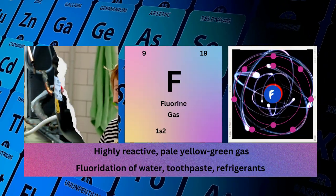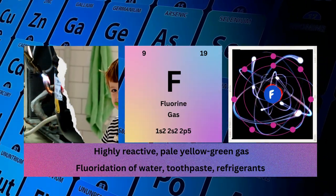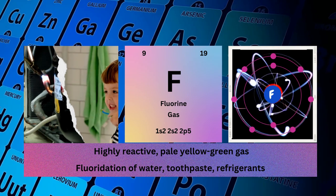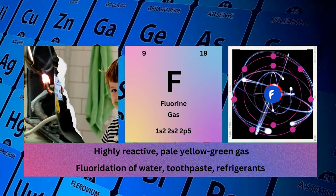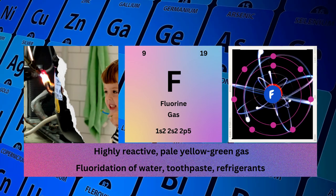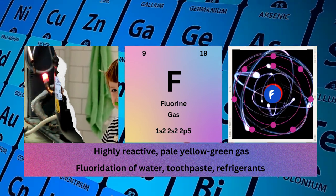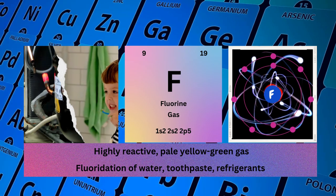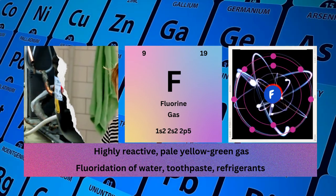Fluorine, atomic number 9, mass number 19, symbol F, state gas, electronic configuration 1s²2s²2p⁵. Physical properties: highly reactive, pale yellow-green gas. Fluorine uses: fluoridation of water, in toothpaste, and as refrigerants.